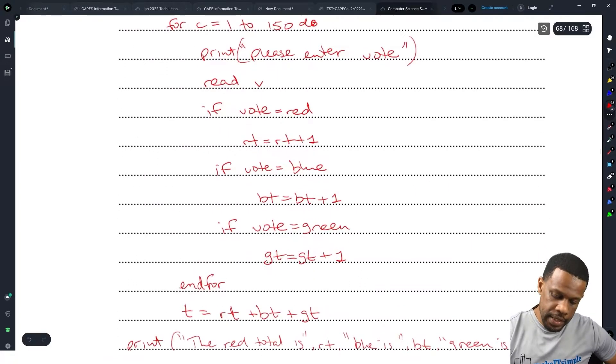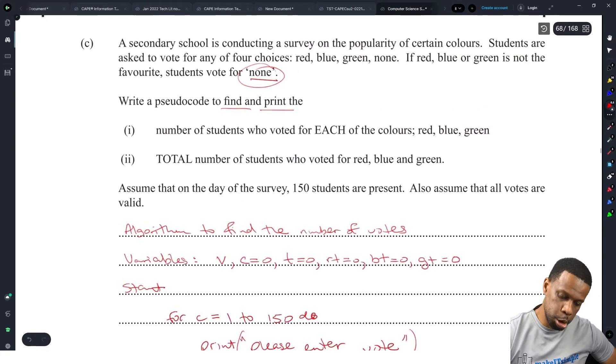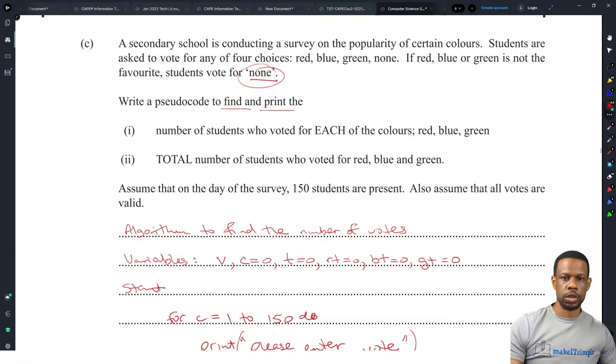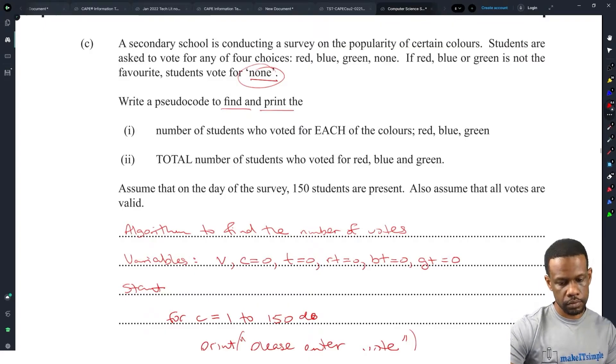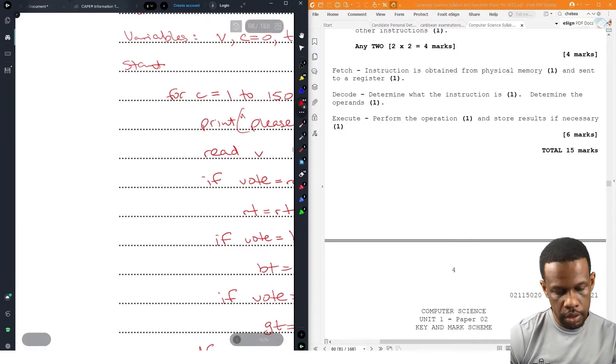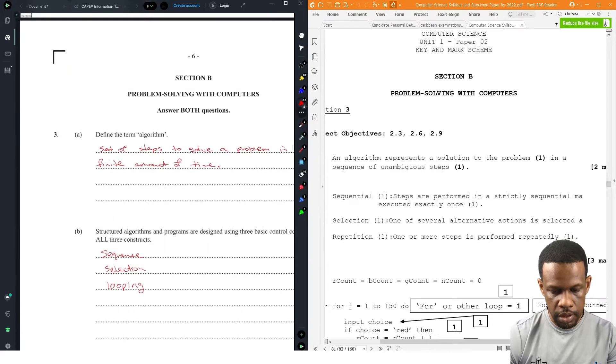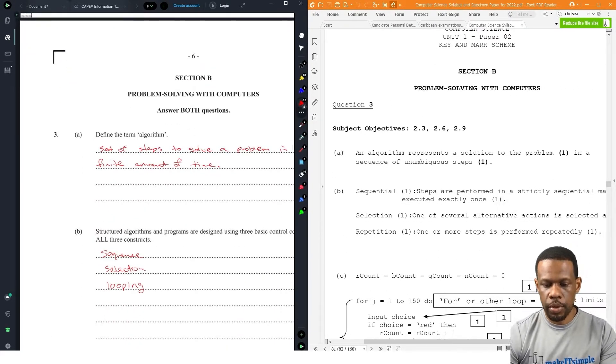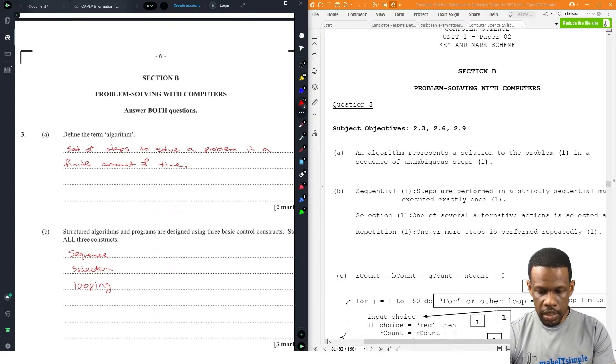Yeah, I think that's it. That should be 10 marks. Did I leave out anything? No, blue does not seem so. Let's check. Alright. According to our answers, we had algorithm solution to our problem in a sequence of unambiguous steps. Yeah, step to solve a problem in a finite amount of time. Okay, cool.